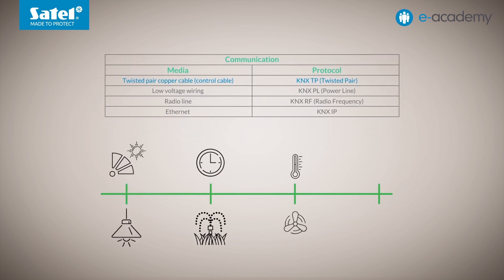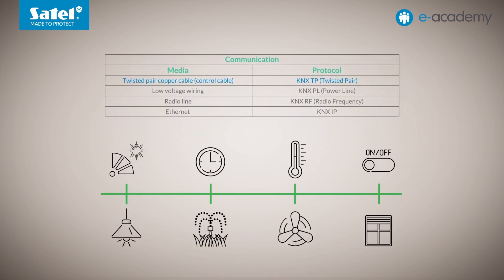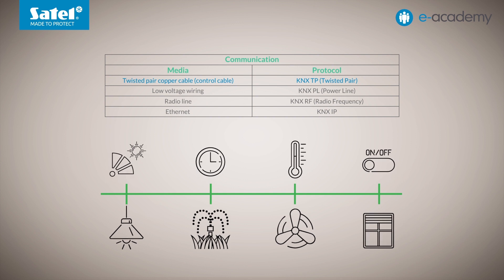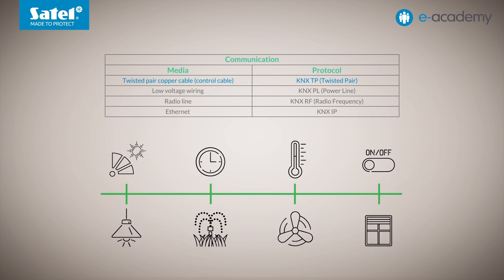In the case of a KNX-TP installation, all system devices communicate with each other over the bus. The devices that are connected to it can be divided into two main types: sensors and actuators.